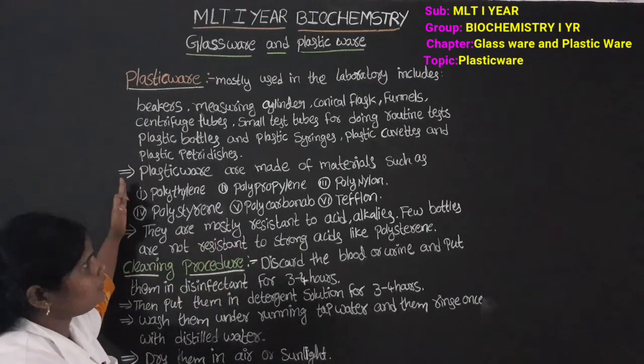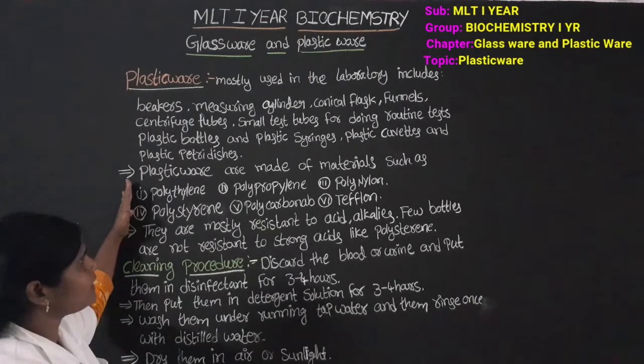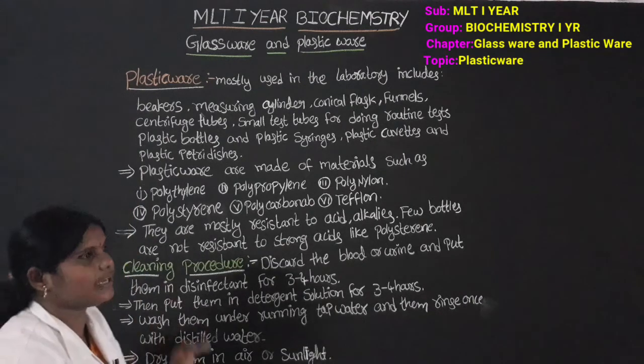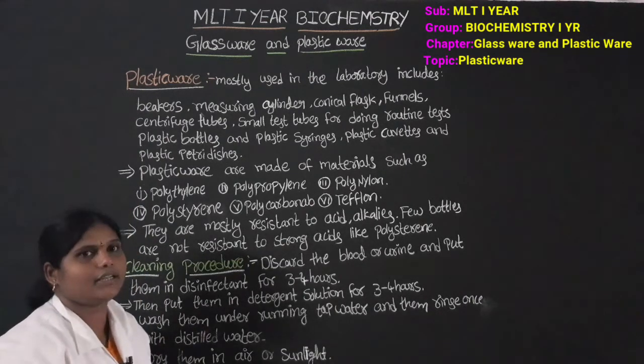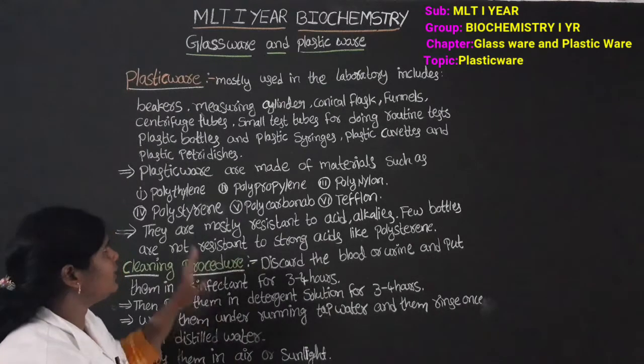Plasticware is made of materials such as polythylene, polypropylene, polynylon, polystyrene, polycarbonate, and teflon — these are the materials used to manufacture plasticware.